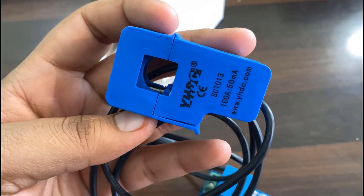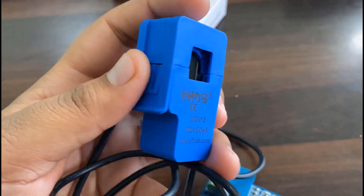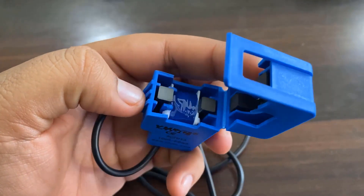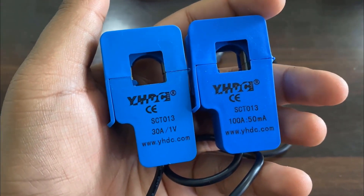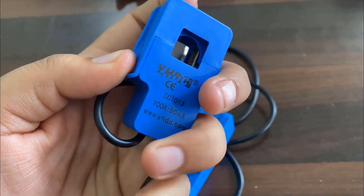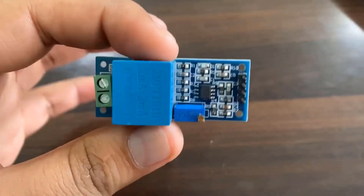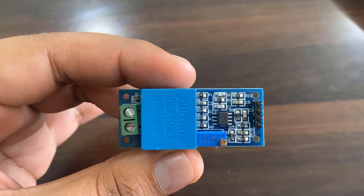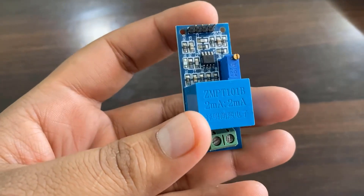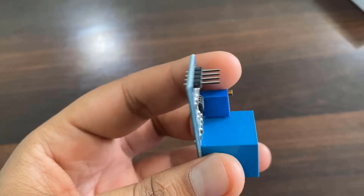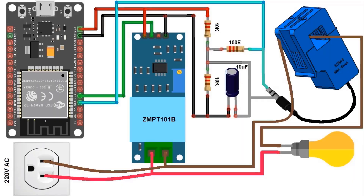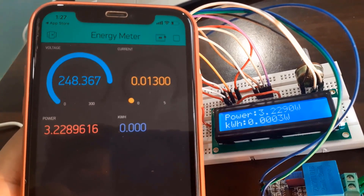The best current sensor available in the market is the SCT013. This is a non-invasive ESP current sensor, split core type clamp meter sensor which can be used to measure AC current up to 100 amperes. Similarly, the best voltage sensor is the AC voltage sensor module ZMPT101B, which is used to measure accurate AC voltage with a voltage transformer.